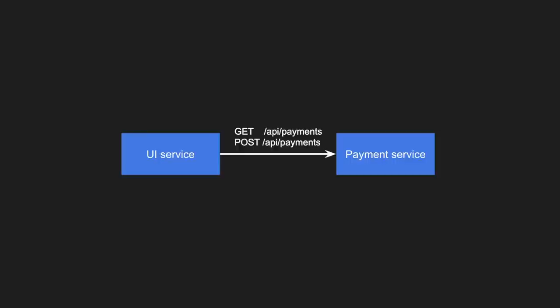Applying transactionality to synchronous communication: if the payment service goes down after a REST POST call is executed, the UI service needs a mechanism to re-trigger that call. Inside the payment service, if a database transaction needs to happen and the database is down, the payment service must ensure it persists correctly. With synchronous communication, you must handle transactionality across microservices, having a backup plan to bring the transaction to a valid end state.